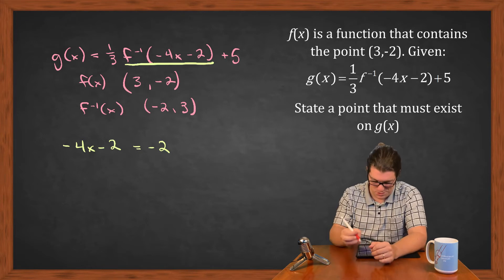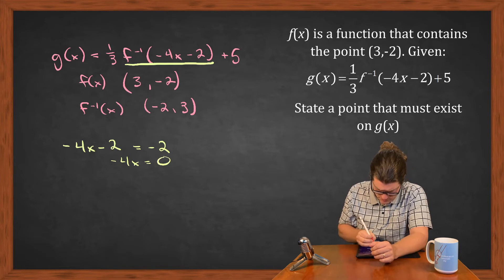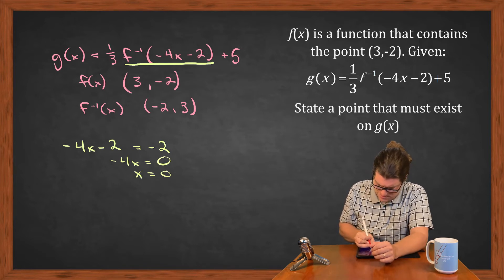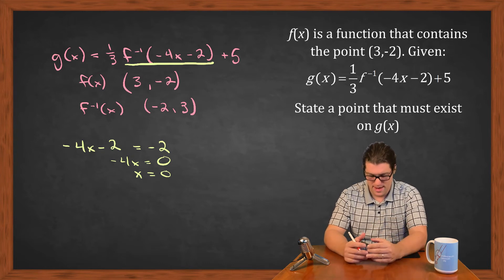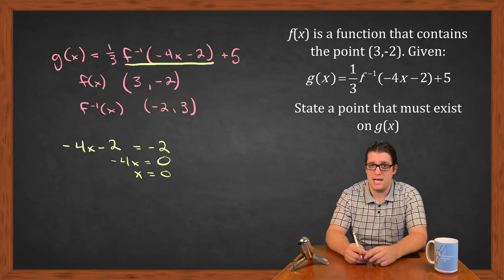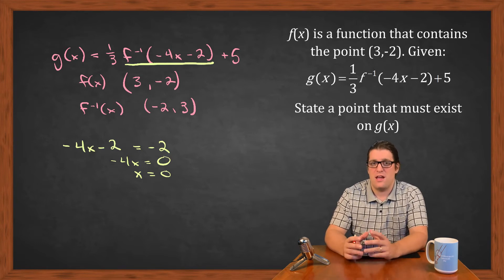So we're actually going to get -4x - 2 = -2, which means -4x = 0, which means that x is going to be equal to 0. So if my x is 0, I can guarantee that that inner argument is going to be -2.